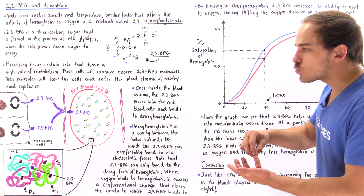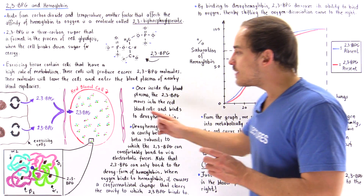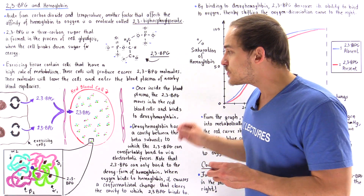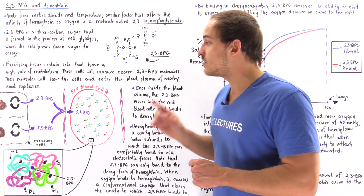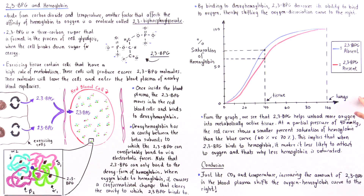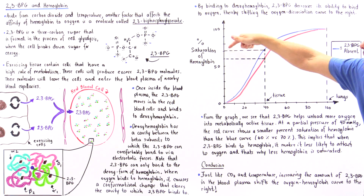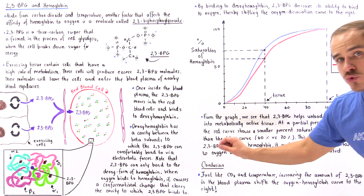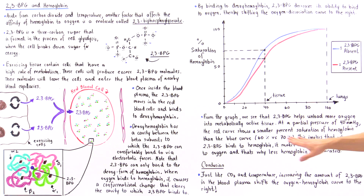When metabolic rate in the tissue increases, cells require more oxygen to produce ATP. That is exactly why 2,3-BPG enters the red blood cells — to bind deoxyhemoglobin and prevent it from binding oxygen, allowing more oxygen to travel into the exercising tissue. The graph confirms that 2,3-BPG helps unload more oxygen into metabolically active tissue.